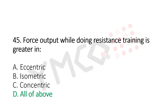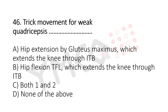Question number 46: Trick movement for coxa vara/sepsis: Option A, hip extension by gluteus maximus, which extends the knee through ITB; Option B, hip flexion by TFL (tensor fasciae latae), which extends the knee through ITB; Option C, both 1 and 2; Option D, none of the above. The answer is Option C, both 1 and 2.